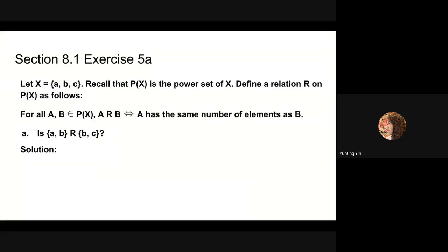Next, we will do problem 5a. Let x be the set containing a, b, c. The power set of x is px. Define a relation r on the power set of x as follows: for all a, b in the power set of x, a is in relation r with b if and only if a has the same number of elements as b. We need to determine if the set {a, b} is in relation r with the set {b, c}. This is obviously true because both sets have two elements.